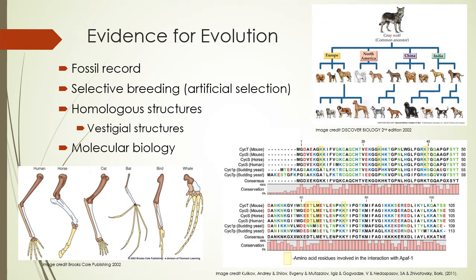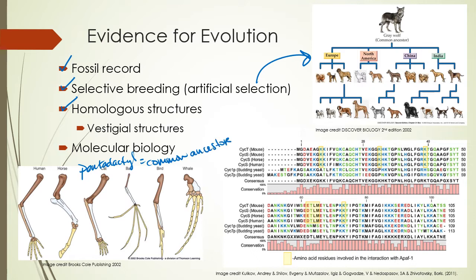We've got lots of evidence for evolution. The fossil record shows us that organisms have changed over time. Selective breeding, or artificial selection — like with these dogs — shows that humans choosing which dogs mated with which allowed us to select the traits passed on to offspring. Homologous structures like these pentadactyl limbs show that all these mammals have very similar underlying bone structures, evidence of a common ancestor, despite having different functions. Vestigial structures are also evidence for evolution, like the hip bones in whales or tailbones in humans.